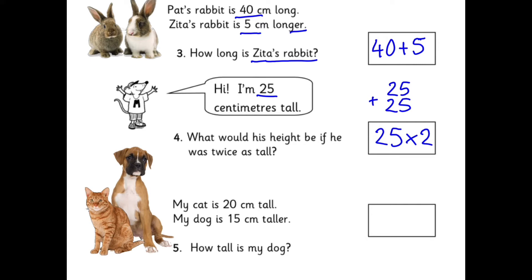My cat is 20 centimetres tall. My dog is 15 centimetres taller. So that's another adding one: 20 add 15. Remember you have to add up the ones first and then the tens, and that will give you the answer. When you've got the answer, remember to write CM because it's a question about length.